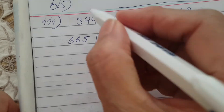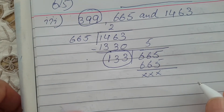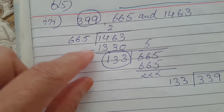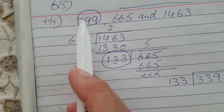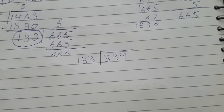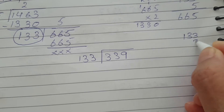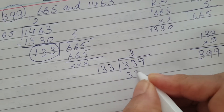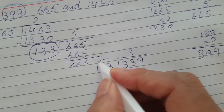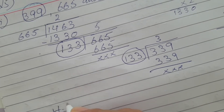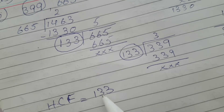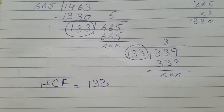Now you are left with the third number, 339. Divide 339 by 133 — the HCF of the previous two numbers — because 133 is less than 339. 133 three times is 399... let's check: 3 threes are 9, 3 nines are 27 — yes, three times is 339 exactly, remainder zero. So the HCF of all three numbers is 133.